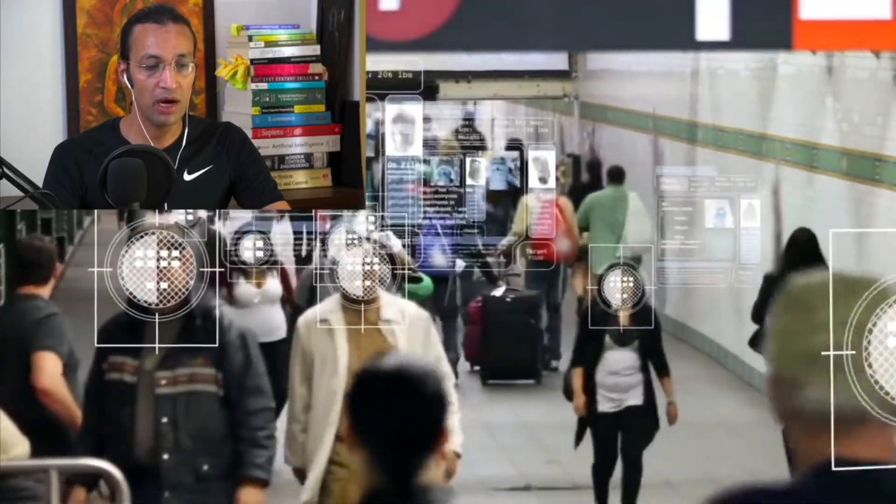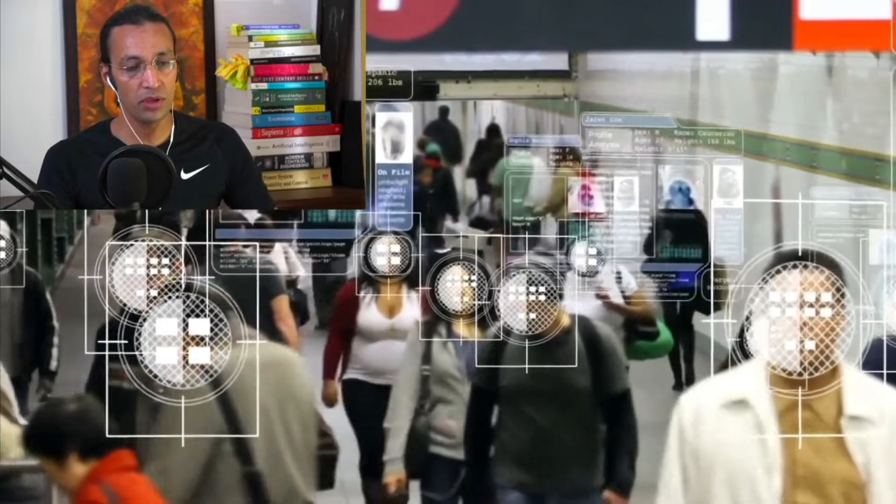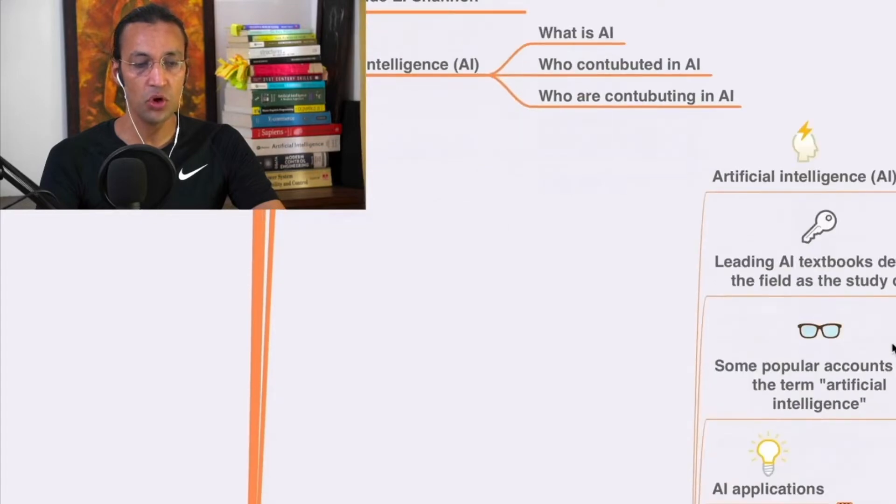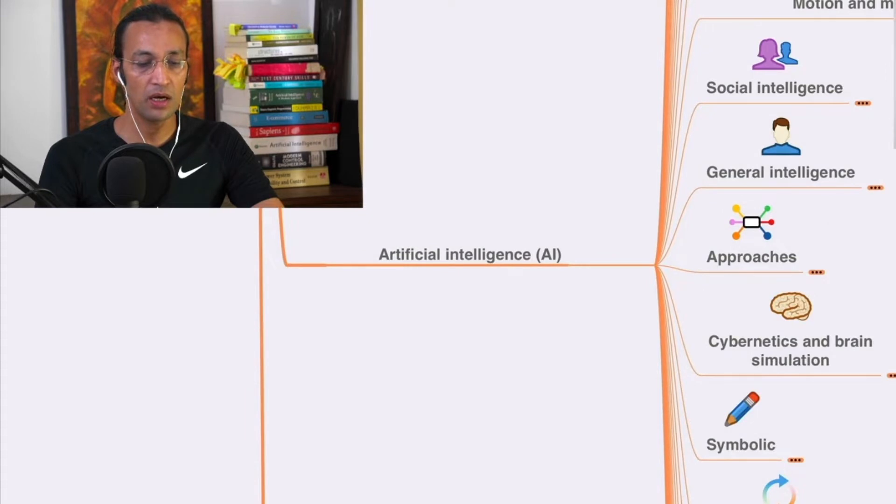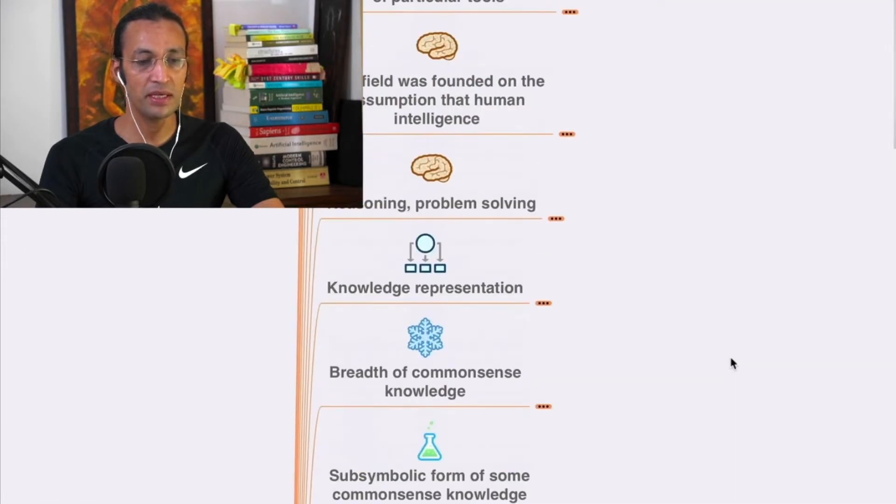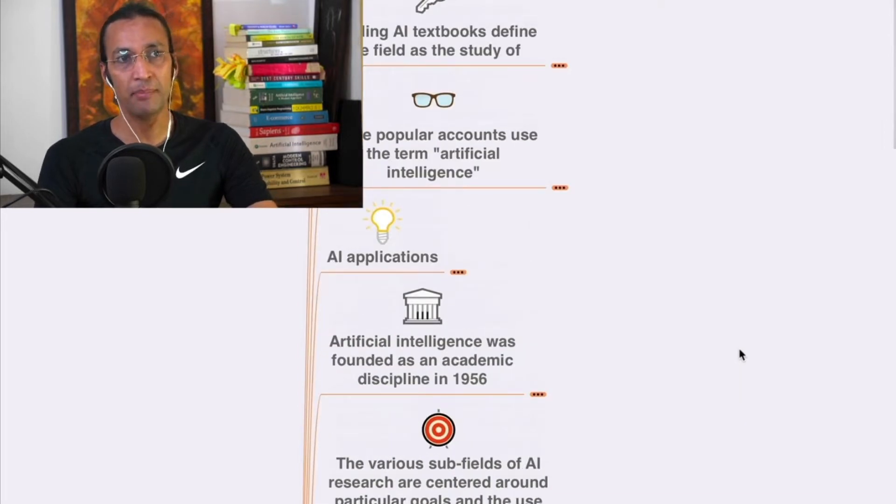We also have Herbert Simon and many other contributors who coined the term artificial intelligence. In this series on artificial intelligence, you will go through all these events, the history, concepts, and what has happened in the past with AI, what is happening right now, and what is going to happen in the future.